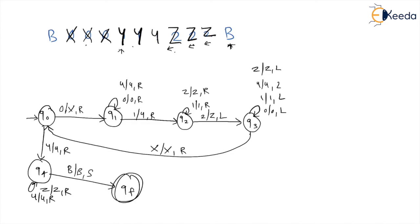With this, we see that the entire logic for 0^n 1^n 2^n can only be implemented by one machine — the Turing machine. With this, we complete this problem. See you in the next session. Thank you.